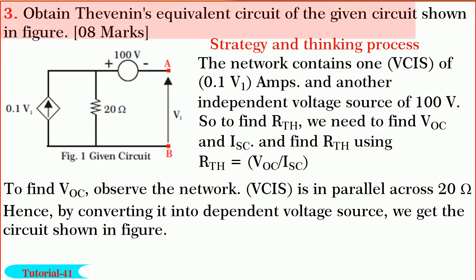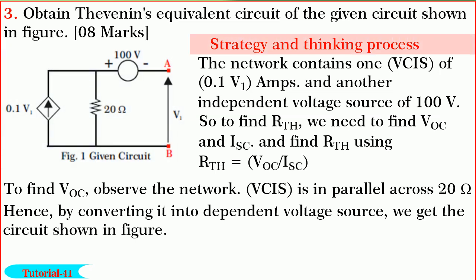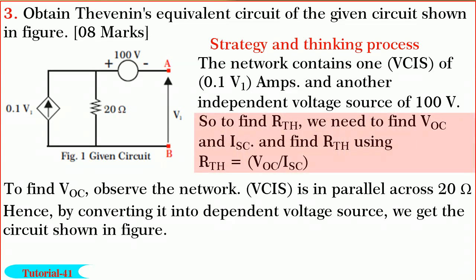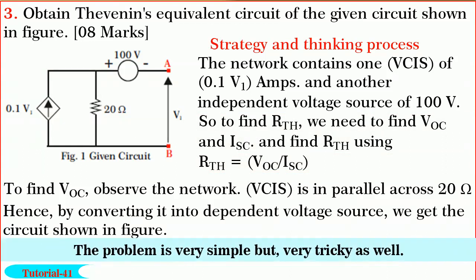Friends, next let us solve the question on Thevenin's theorem. We are required to find the Thevenin's equivalent circuit of the circuit shown in figure. Observe the given network. The network contains one voltage-controlled current source of 0.15·V1 amperes in parallel with 20 ohm resistance, and another independent voltage source of 100 volts. To find R_thevenin, we need to find both VOC and I_SC and compute R_thevenin equal to VOC divided by I_SC. The problem is very simple but very tricky.